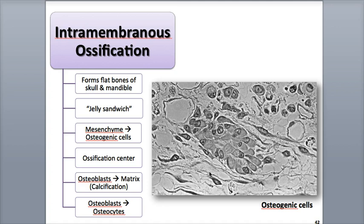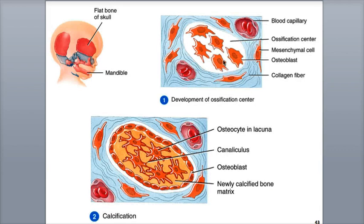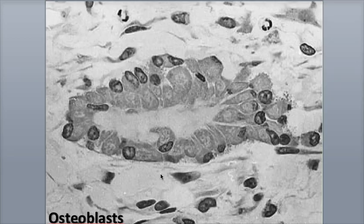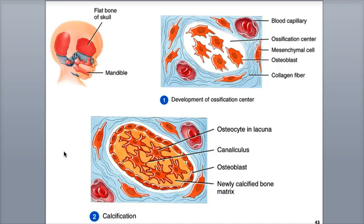This grouping of cells is called an ossification center. Here we see the ossification center in the illustration, made up of osteoblasts and surrounded by mesenchymal cells and a skeleton of collagen fibers. Here we see a cluster of osteoblasts in the process of building up the bone tissue, secreting that matrix. In step two, ultimately the production of the matrix stops and the osteoblasts are now osteocytes within lacunae, which are the chambers within that hardening extracellular matrix.